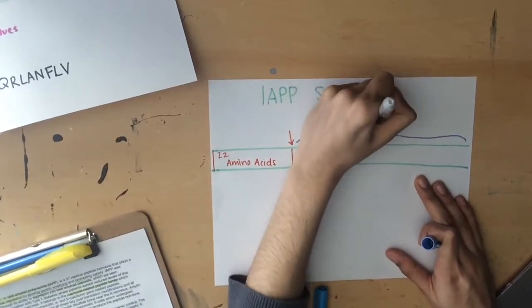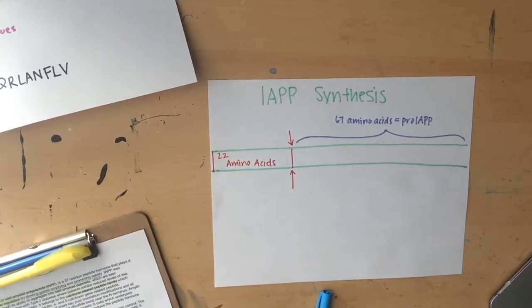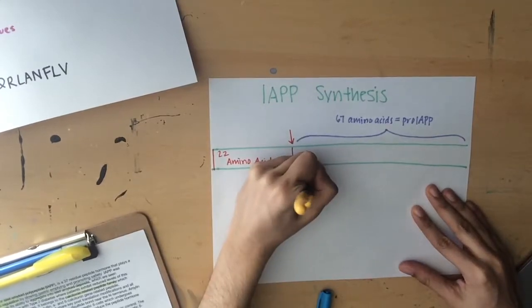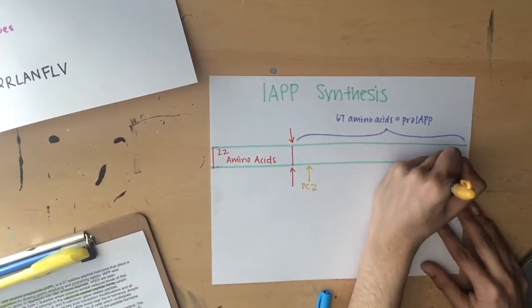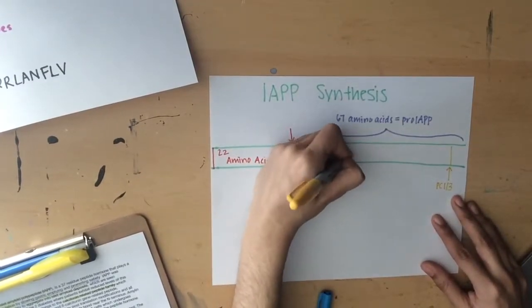The mature 37 residue protein is produced by proteolysis at pairs of basic residues at the C and N termini of the mature peptide. Eleven amino acids are removed from the N-terminus by the enzyme proprotein convertase 2, and 16 amino acids are removed from the C-terminus by proprotein convertase 1-3.